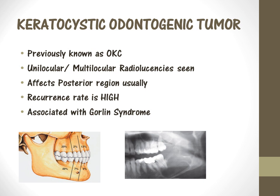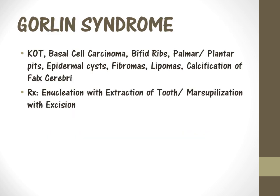The unique feature of the keratocystic odontogenic tumor is that the recurrence rate is very high, and it is associated with something called Gorlin syndrome. Gorlin syndrome has associations with keratocystic odontogenic tumor, basal cell carcinoma, bifid ribs, palmar or plantar pits, epidermal cysts, fibromas, lipomas, and calcification of the falx cerebri. The adequate treatment for keratocystic odontogenic tumor is enucleation with extraction of the tooth if the cyst is small. If the cyst is bigger, you need to do marsupialization, where you remove about 90% of the cyst and leave the 10% which is close to vital structures such as a nerve or artery.